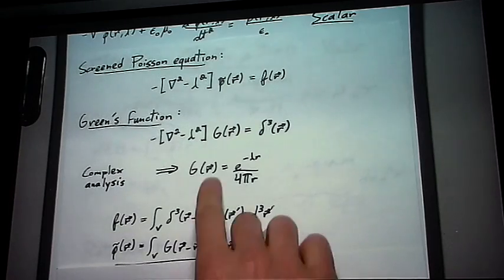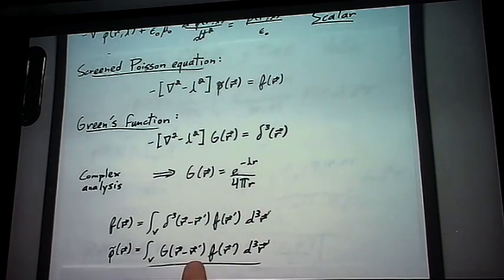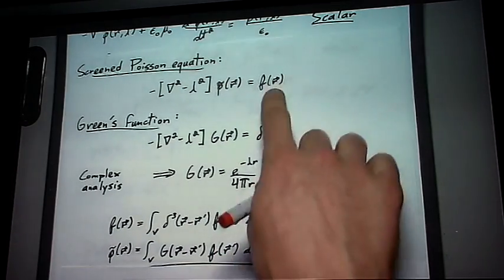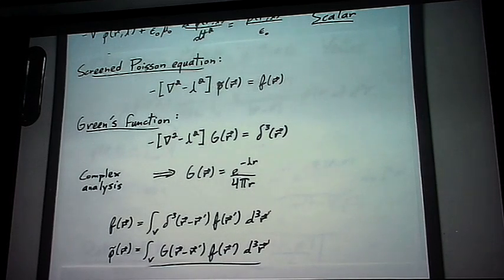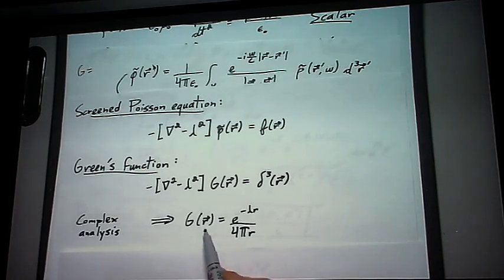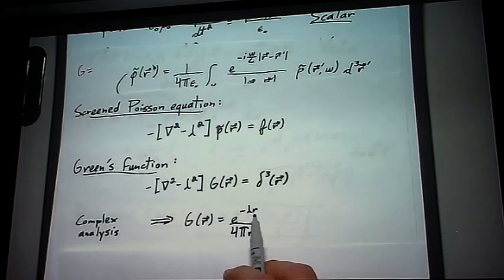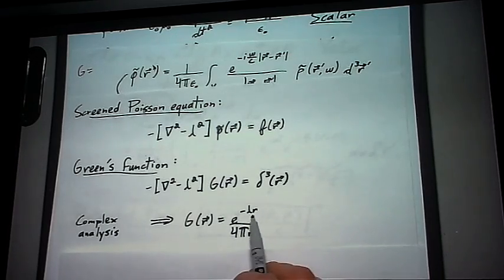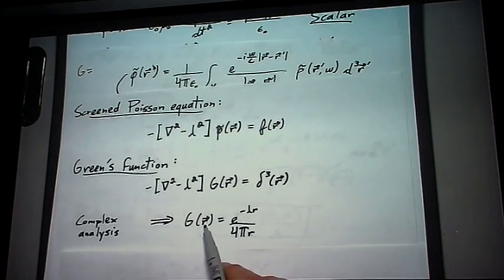So what we can do is we can plug in the Green's function we found, and also our function f, but we'll replace r by r prime. So here, g was the Green's function in terms of r, and here is the norm of the vector r here.